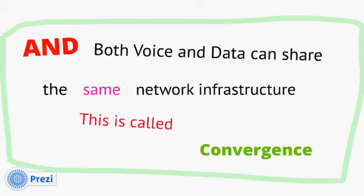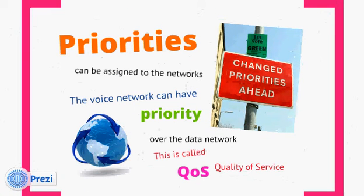The other option is to have a totally separate network for voice, which is what we had in the past — with its own cabling infrastructure and its own switching devices — and then another one for data, which is kind of redundant. Now with VLANs, we can use the exact same network infrastructure. We can also assign priorities to the networks so the voice network has priority over the data network. This is called Quality of Service, or QoS.